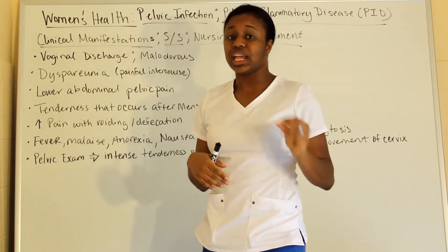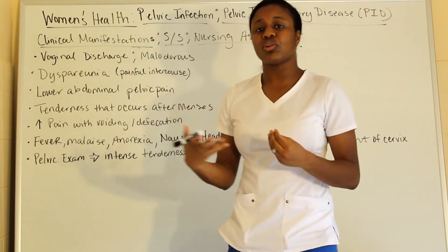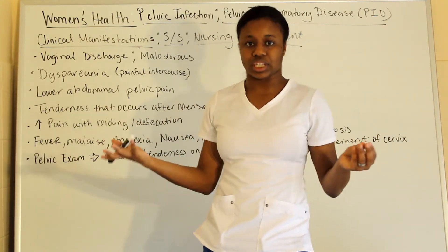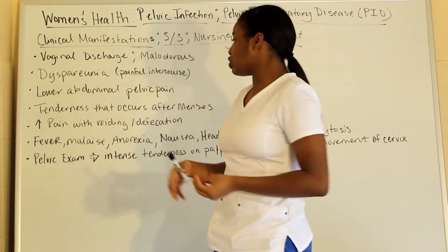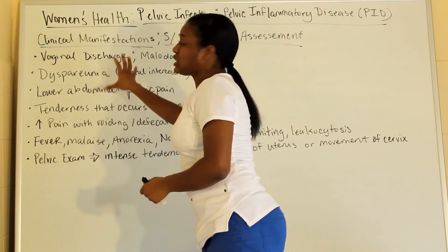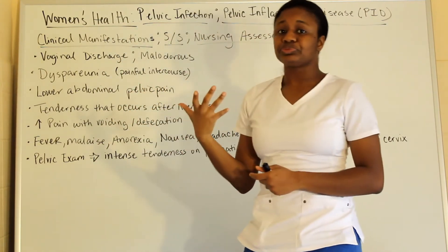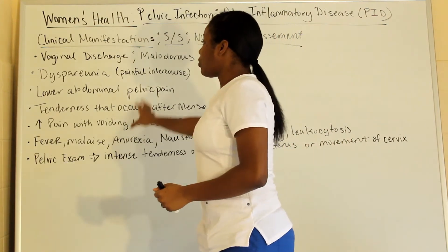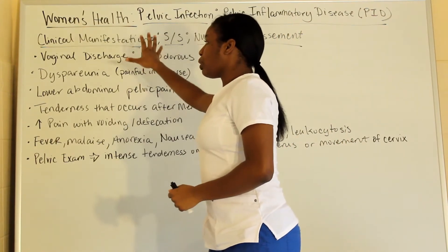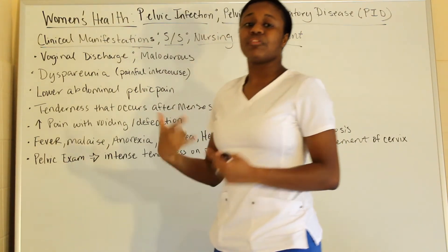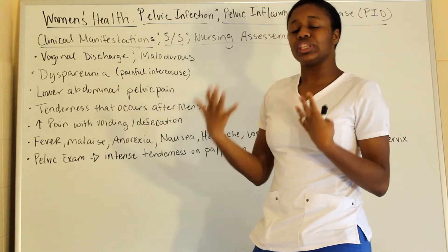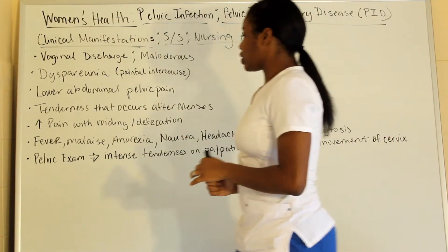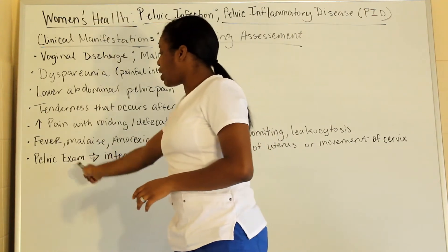Fever, malaise, anorexia, nausea, and vomiting are typical signs that can appear with many conditions, so focus on what makes PID stand out. Always identify the differentiating features of a disease first, then note what it has in common with other diseases.